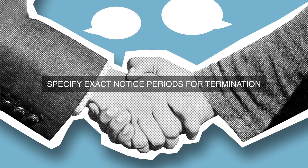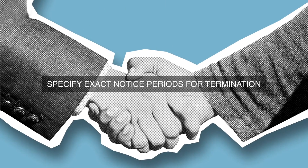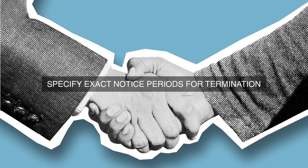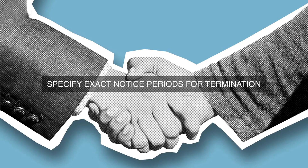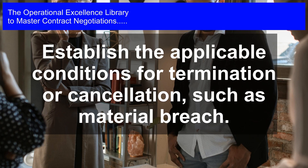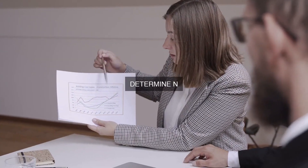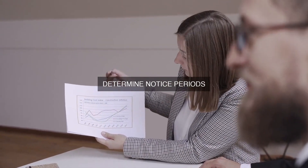Conditions applicable to termination. The following conditions shall apply to the termination or cancellation of the contract. 1. Payment of outstanding amounts: Upon termination or cancellation of the contract, the parties shall settle all outstanding amounts payable to each other within (insert number, e.g. 30) days from the effective date of termination.